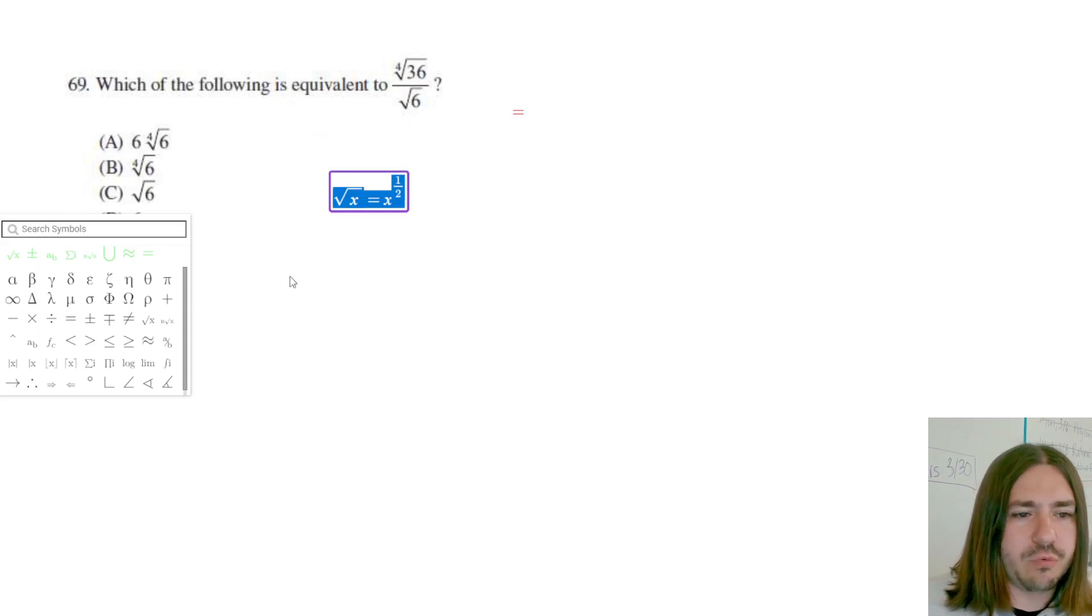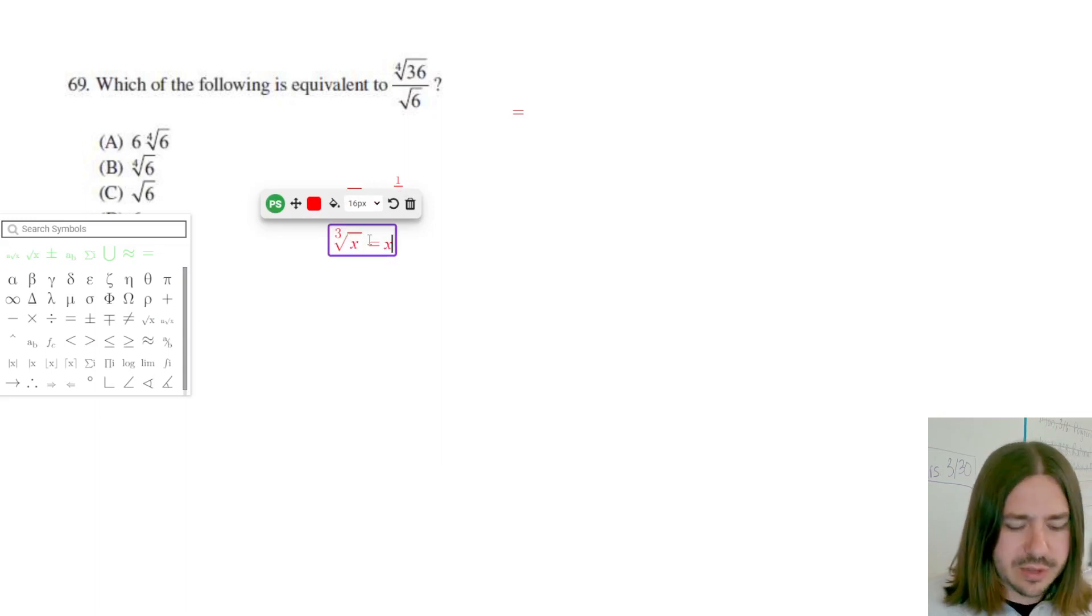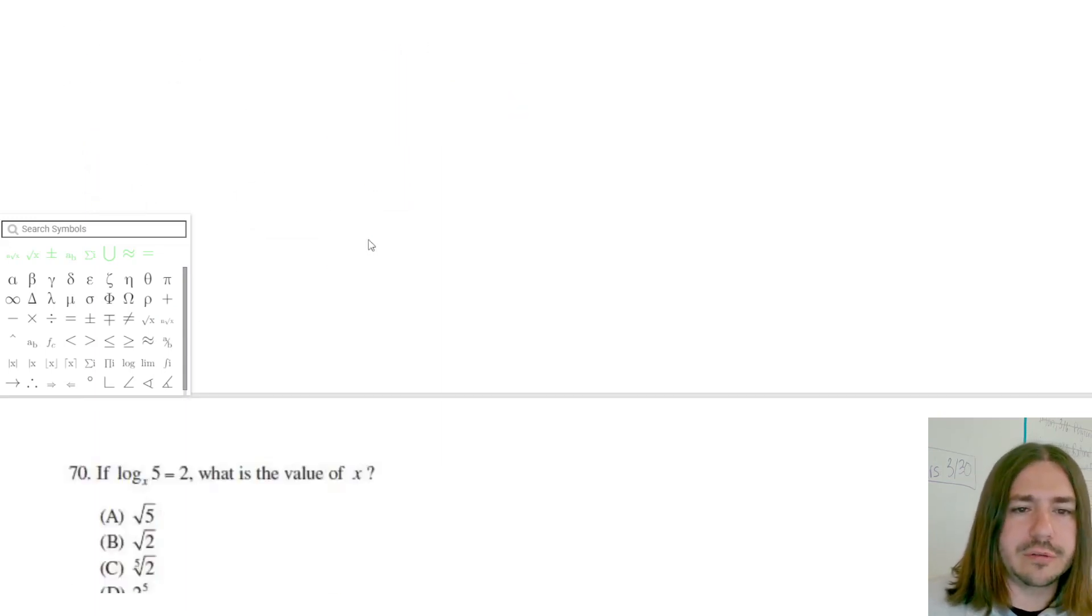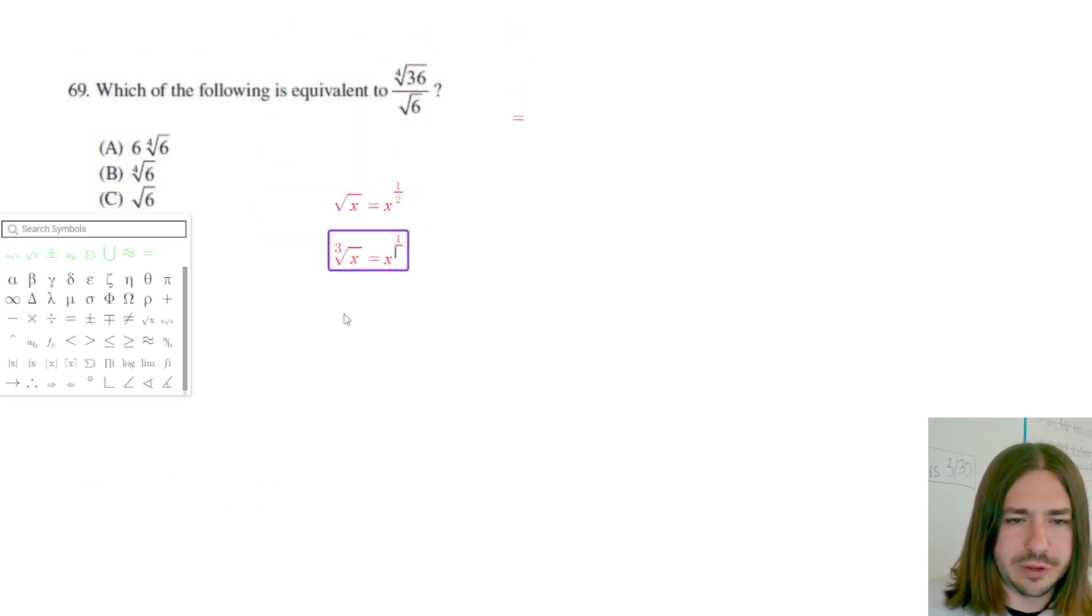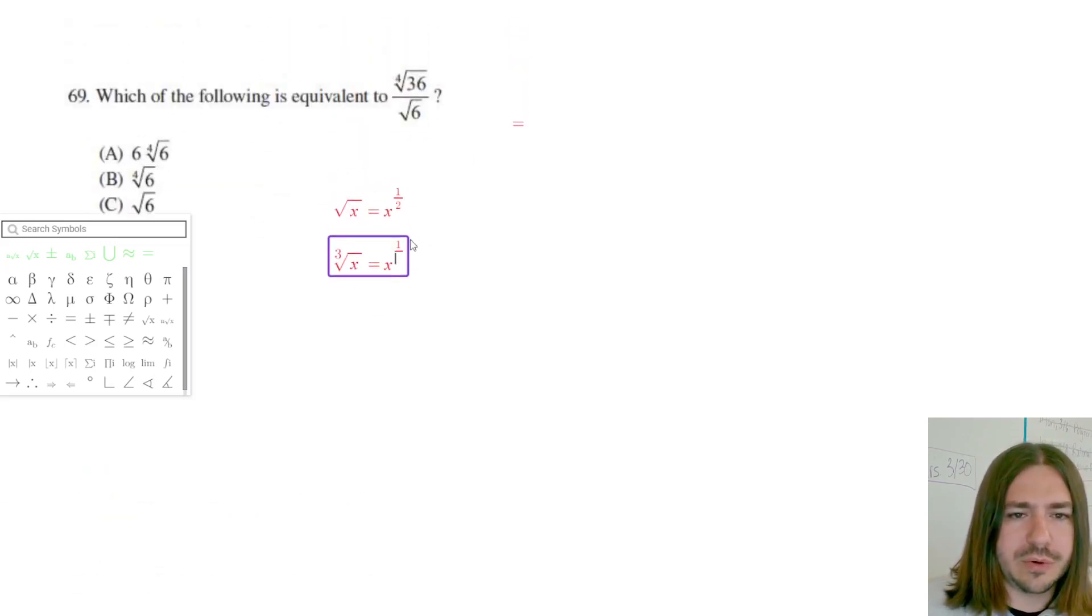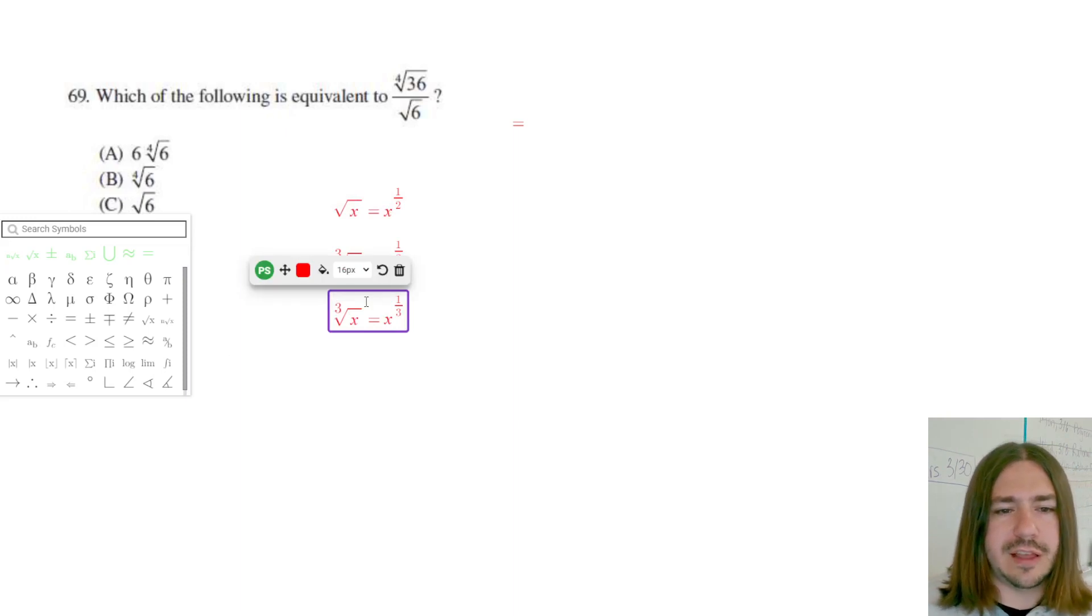And if you have any root x, so let's say we have the third root of x, that's equivalent to x to the one-third. If we have the fourth root of x, that's the same thing as saying x to the one-fourth and so on.